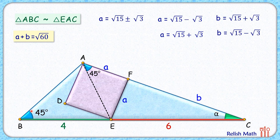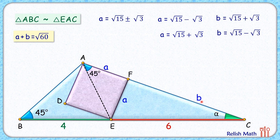To determine which value is valid: angle B is 45°, angle alpha is less than 45°, and angle F is 90°, so angle E in triangle EFC is greater than 45°. Since the side opposite the larger angle is greater, side b must be greater than side a. Therefore the valid solution is a = √15 − √3 and b = √15 + √3.